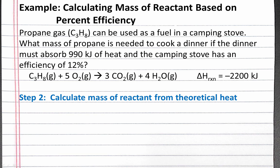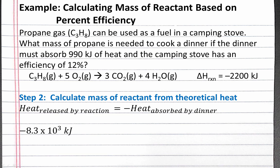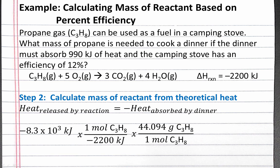Next, we'll calculate the mass of the reactant needed to produce this theoretical amount of heat. The heat released by the reaction is equal to the negative of the heat absorbed by the dinner, so we'll start our dimensional analysis with negative 8.3 times 10 to the third kilojoules. We can convert from kilojoules into moles of propane using the change in enthalpy and the coefficient for propane in the balanced chemical equation, and then convert from moles of propane into grams using its molar mass.